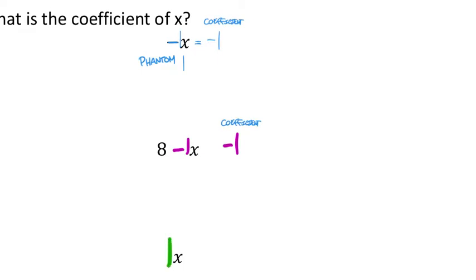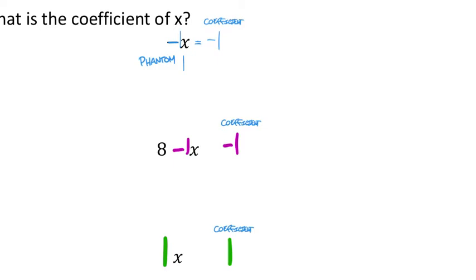For just x by itself, there is a phantom one being multiplied by that x, so the coefficient is positive one. Phantom ones are values you can't always see, but you can make them show if you'd like so they can't hide. These examples are generally the most tricky for students when understanding what coefficients are, and we will need to understand them in the future.